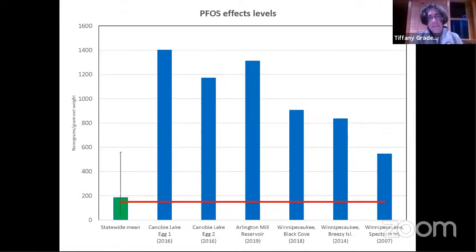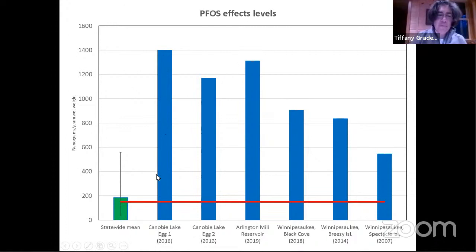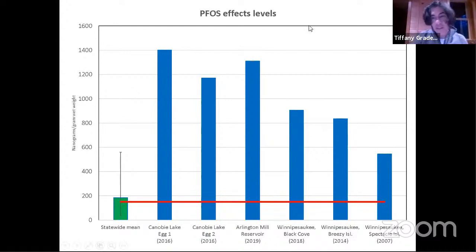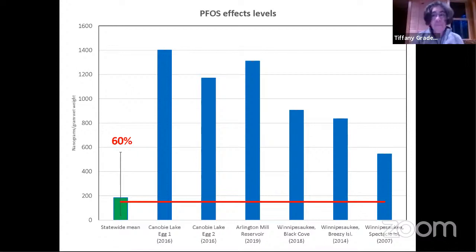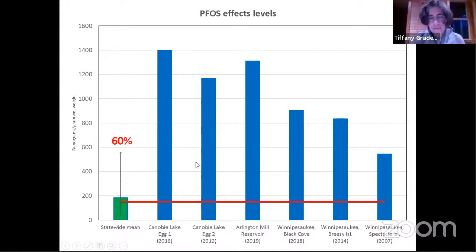Looking at effect levels for PFOS specifically — since this is the dominant type researchers have studied — this red line indicates the lowest effects level where health or reproductive impacts have been seen in other bird species. The high eggs from Canobie and Arlington Mill far exceed this effects level. Statewide, about 60% of our eggs exceed that effects level. We don't know how sensitive loons are, but it's not a good sign that 60% of our eggs exceed this level. That's concerning.